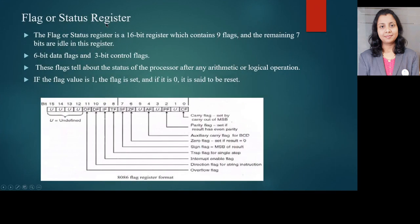Next are the flag or status registers. The flag or status register is a 16-bit register which contains 9 flags; the remaining 7 bits are idle. It has 6-bit data flags and 3-bit control flags. These flags tell about the status of the processor after any arithmetic or logical operation, which is why it is also named the status register. If the flag value is 1 the flag is set, and if it is 0 it is reset.